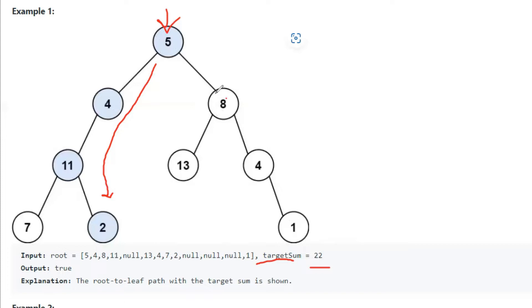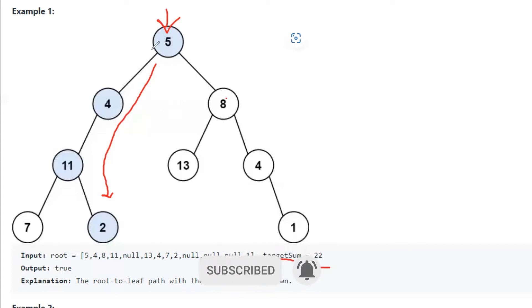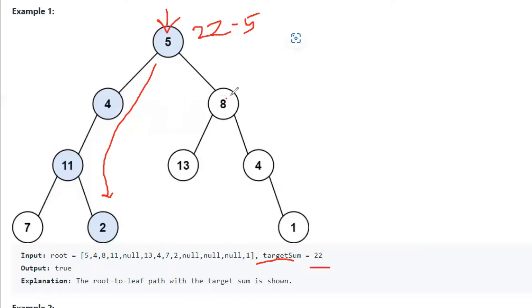Whenever we go to child nodes, we keep calling the same function recursively. Before calling the function with root.left or root.right, we subtract the current root value. So that becomes the next target sum we look for in the children. For example, 22 minus 5 is 17, which is the next target. Then 17 minus 8 for the right child, and 17 minus 4 for the left child.